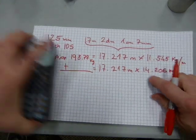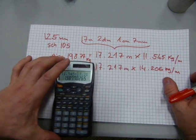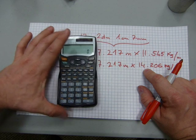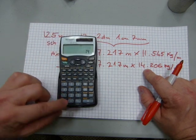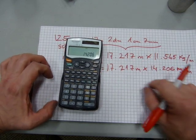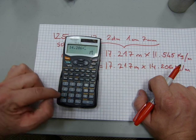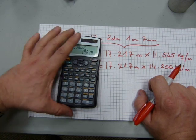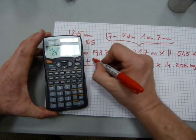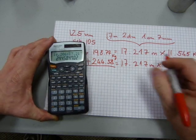Next one is the water. And you can multiply these in any order, but they should have the same final result. Next one is 14.206 kilograms. And we have 17.217 meters worth of it. So times it by 17.217 equals 244.58 kilograms. That's the water.